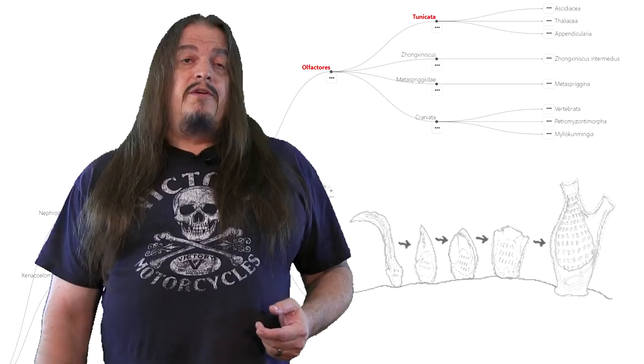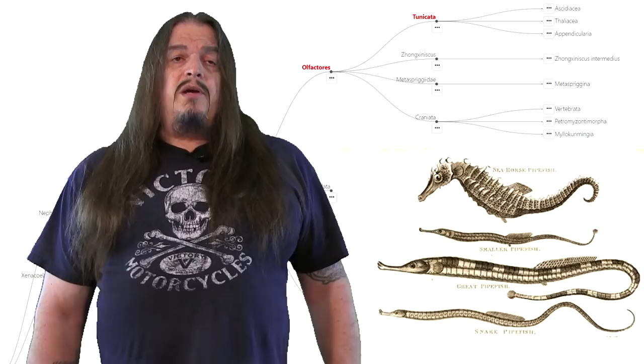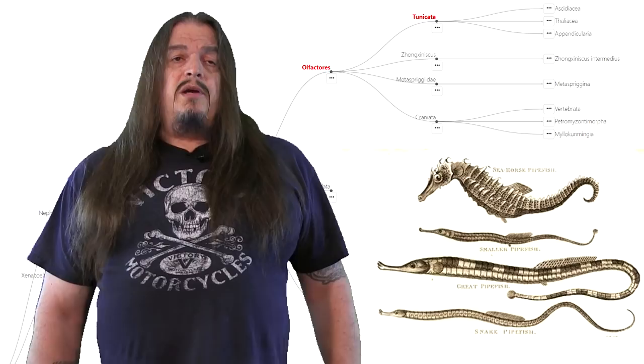If that's confusing, just remember that seahorses also started out as straight pipefish and then got all bent out of shape and are quite kinky now. Most other chordates, however, still adhere to the head-to-tail polarity going forward.